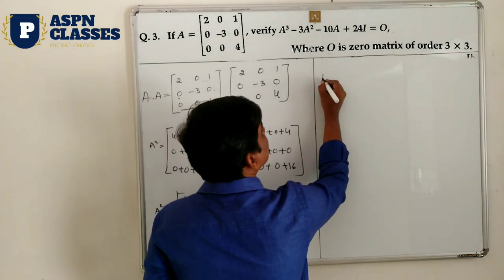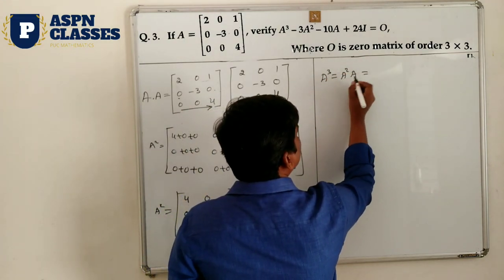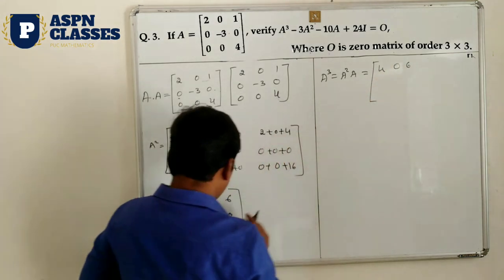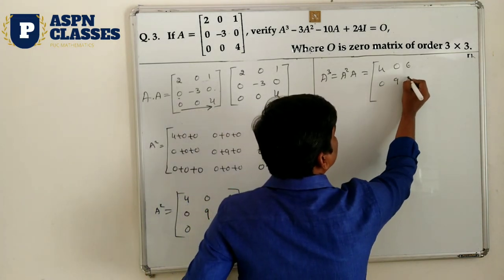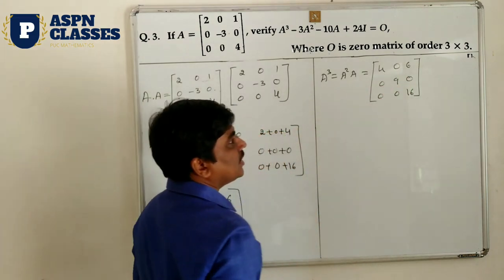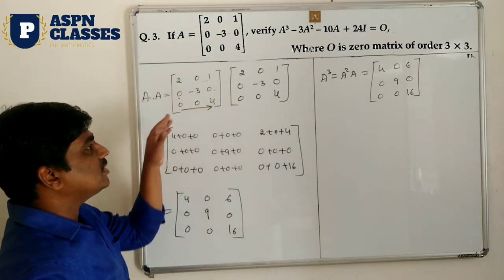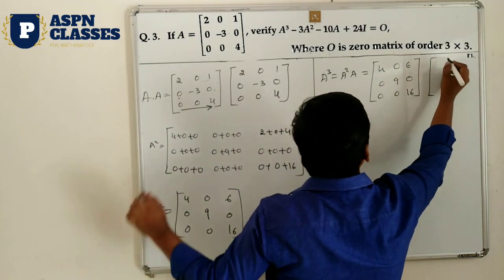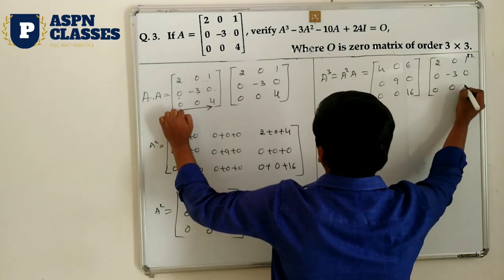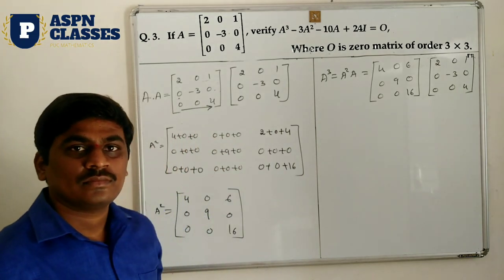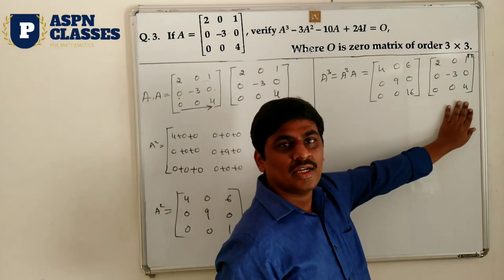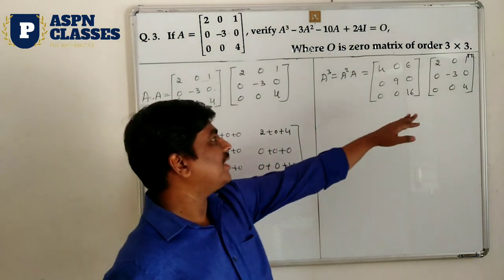After getting A square, find the A cube result. A cube is nothing but A square multiplied by A. Write the A square matrix: [4, 0, 6; 0, 9, 0; 0, 0, 16]. Multiplied with the A matrix: [2, 0, 1; 0, -3, 0; 0, 0, 4]. Now multiply these two matrices to get A cube.